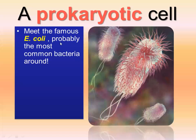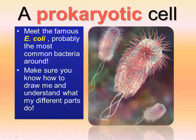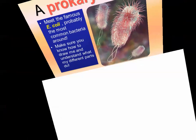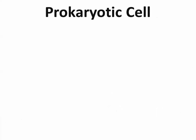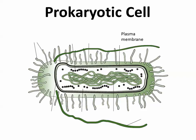E. coli is one of the most common types of bacteria — there's plenty of it in your gut right now. Make sure you're able to draw a generalized prokaryotic cell. Just think jelly bean to start, and at least you'll get the outermost layer. Here's a simplified diagram — you could draw something like this.